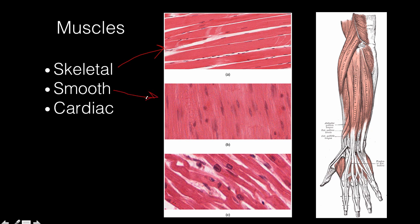Smooth muscle is found in your internal organs, mostly in your digestive system — your stomach, small intestine, large intestine — and it's also in the lining of arteries. It can contract or relax involuntarily. Cardiac muscle is found in your heart and is involuntary as well, so you can't control it. You can see a whole bunch of skeletal muscles on this diagram of an arm. A skeletal muscle is then attached to a tendon that is attached to the bone, and it can pull or contract and move the person's arm.